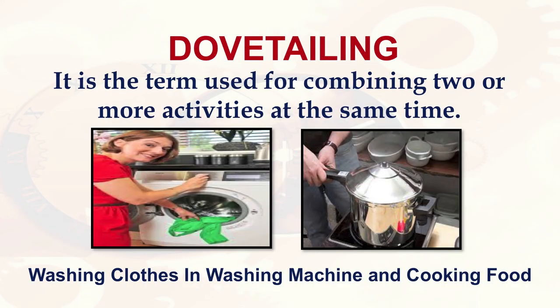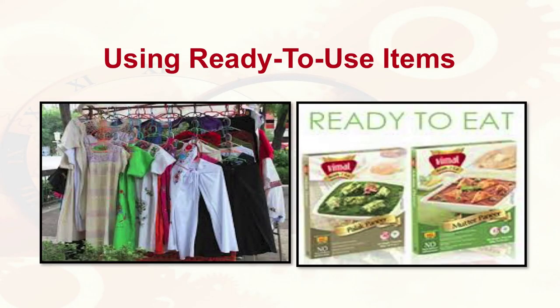There is a very interesting concept called dovetailing. Some people do it without knowing the concept. Dovetailing is a term used for combining two or more activities at the same time. For example, washing clothes in the washing machine and cooking food at the same time. The washing machine is running, cooking is being done, and when things are in the cooker you can chop other vegetables or knead the dough. You can also make your child sit nearby to do homework, or switch on the radio for entertainment. You can think of any number of methods to do dovetailing or appropriate work organization.